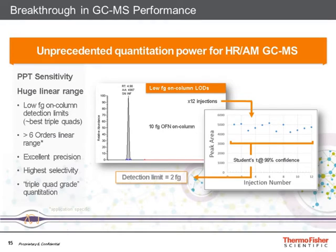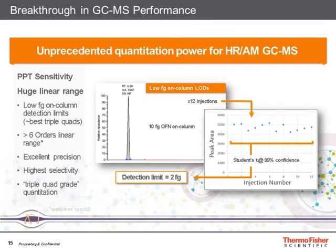This high resolution and mass accuracy is supplemented by exceptional sensitivity performance. We have a system suitability test that can be performed on every instrument, testing at very low levels — 10 centigrams of octafluoronaphthalene on column. Because of the exceptional resolution from the system, we don't really see any noise. We define our system's analytical performance based on a statistical evaluation of replicate data, and we believe that the detection limit for most analytes would be in the very low centigram level. For octafluoronaphthalene specifically, it is 2 centigrams.